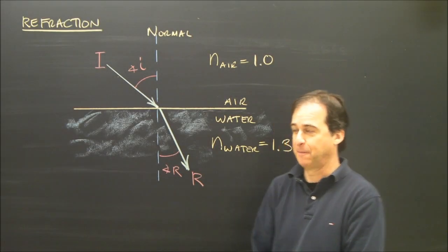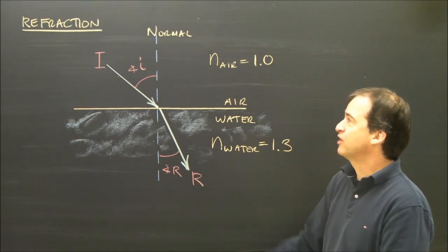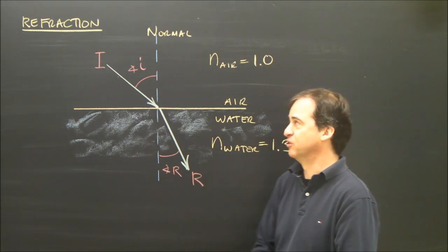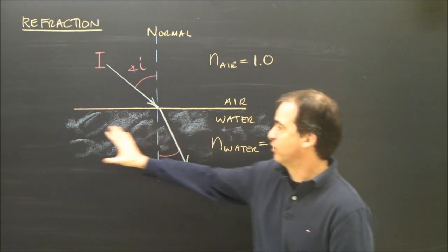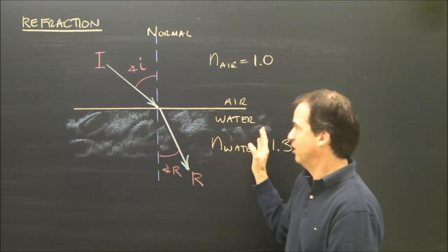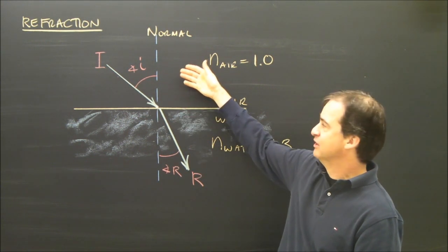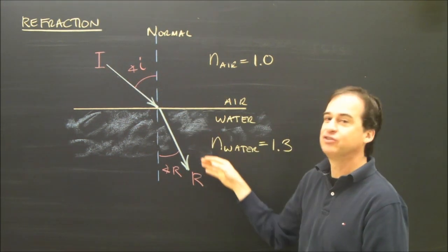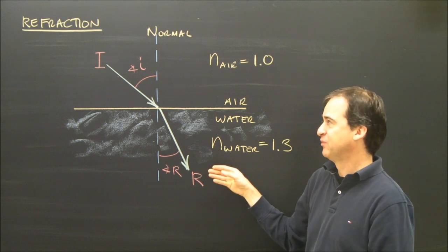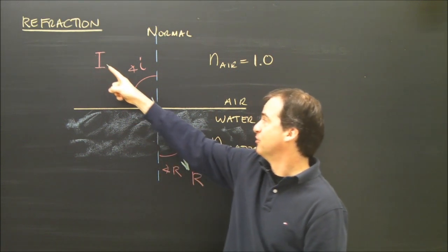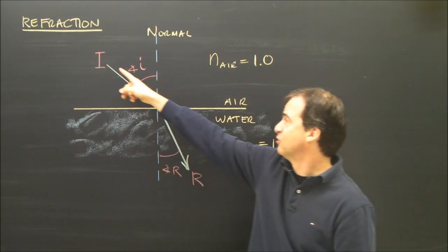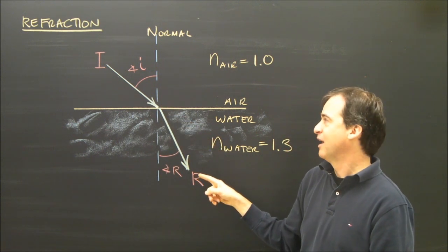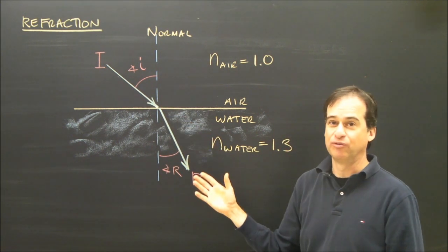Let's talk about refraction. Refraction is when light bends as it goes from one material to another. Here I've got some water, maybe in a pond, and here's the air above it. The light is shining from the air into the water. If I shine a laser beam of light, I can see that as the light went into the water, it would bend like this. And this is called refraction.